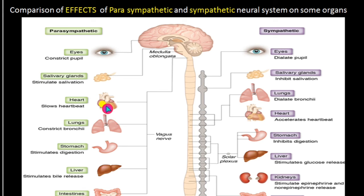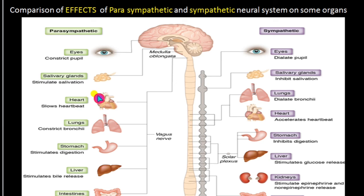The normal heart rate is 72 beats per minute. During excitation, the heartbeat increases to 80, 90, or even 100, but parasympathetic activity does not slow it down below normal — it brings the heartbeat rate back to 72 beats per minute.